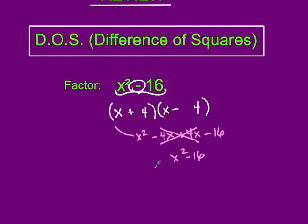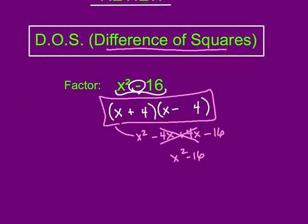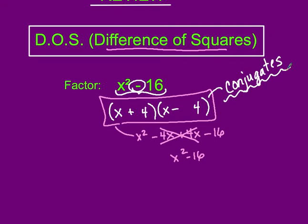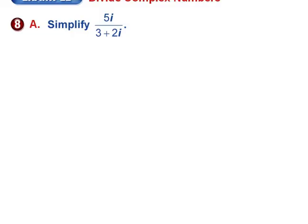To cancel the imaginary terms in division, I use the difference of squares factors. These are called conjugates. When I multiply the top and the bottom of a fraction by the conjugate of the denominator, it eliminates the imaginary terms in the denominator.